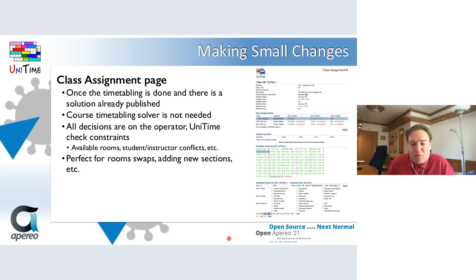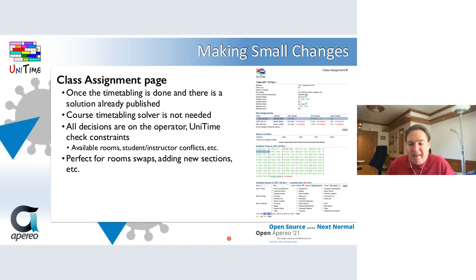Another way small changes can be done in UniTime is by using the class assignment page. This is useful when you do not want to run the solver anymore — for example, when the class schedule has already been published and there are students enrolling in classes. It is perfect for making small adjustments directly to the current schedule, such as moving a class to a bigger room or adding an additional section. Since we are no longer running the solver, there are no suggestions, but UniTime still checks for conflicts. This page also allows breaking any of the constraints and even moving a class into a room not currently available to the department.